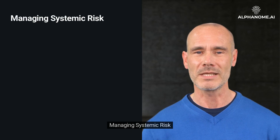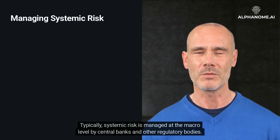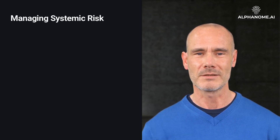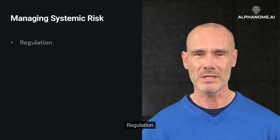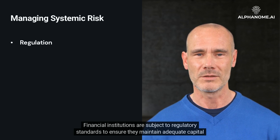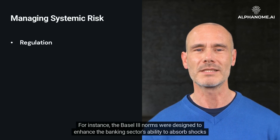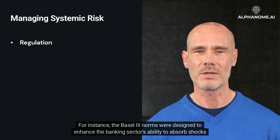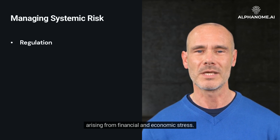Managing Systemic Risk. Due to its widespread impact, managing systemic risk is challenging. Typically, systemic risk is managed at the macro level by central banks and other regulatory bodies. One strategy is regulation — financial institutions are subject to regulatory standards to ensure they maintain adequate capital levels and limit their risk-taking activities. For instance, the Basel III norms were designed to enhance the banking sector's ability to absorb shocks arising from financial and economic stress.